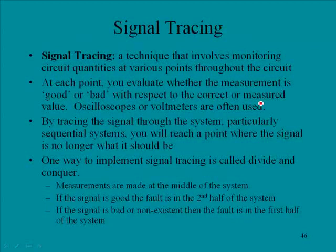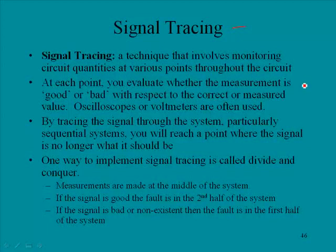The next troubleshooting technique is signal tracing. It's a technique that involves monitoring circuit quantities at various points throughout the circuit. At each point you evaluate whether the measurement is good or bad with respect to the correct value. Typically oscilloscopes or voltmeters are used, and an important skill is knowing what value should be measured at given points — usually provided by technical manuals or schematics. By tracing the signal through the system you'll reach a point where the signal is no longer what it should be, indicating the fault.